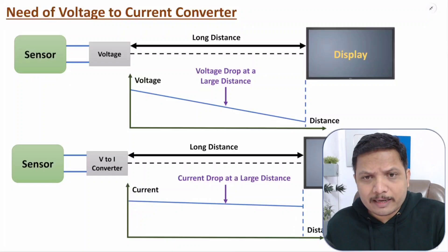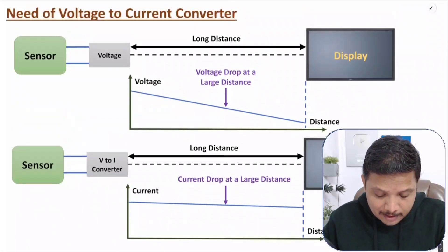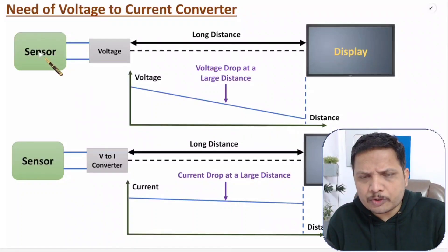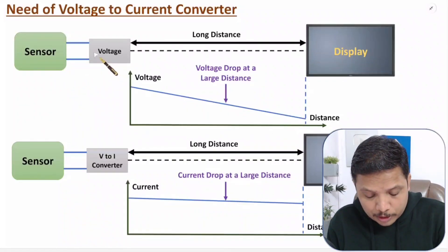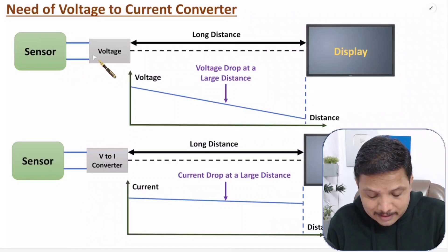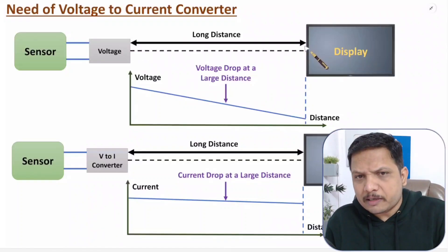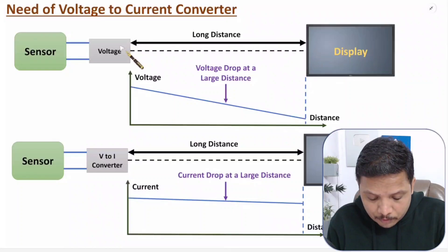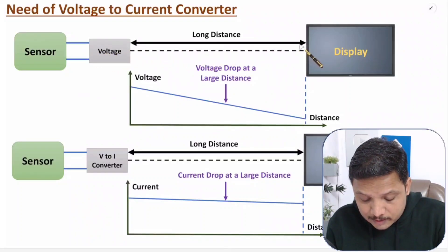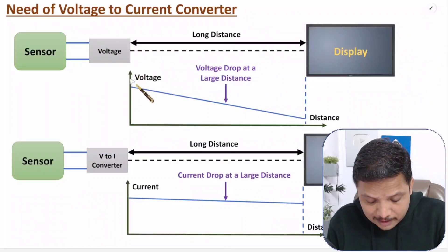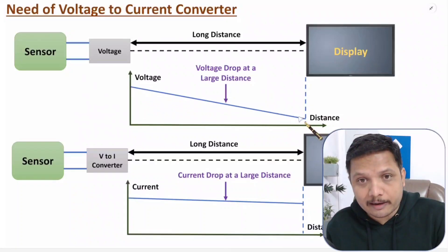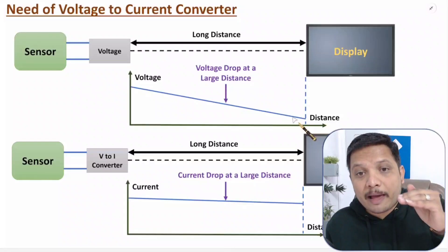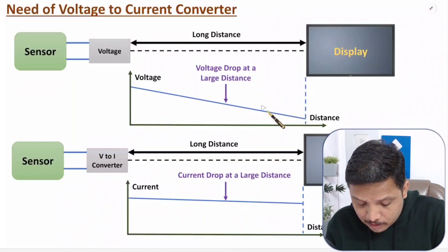What is the need for a V2I converter? In instrumentation and control engineering, sensors are used in industries to measure some quantity and their outputs are voltages. These sensors are often placed at a long distance from the display or data acquisition system. When you transfer a voltage signal over a long distance, voltage decays — voltage drop happens across the wire.